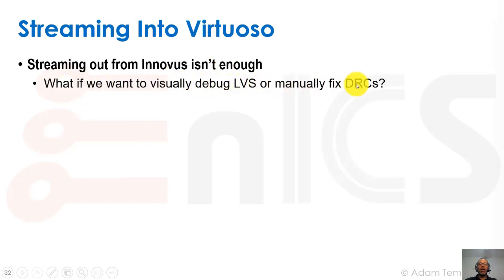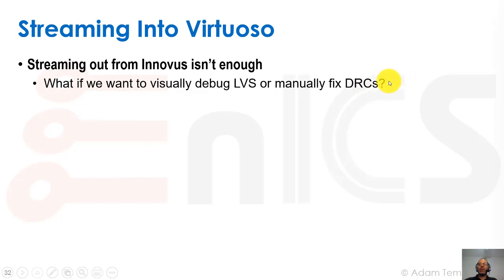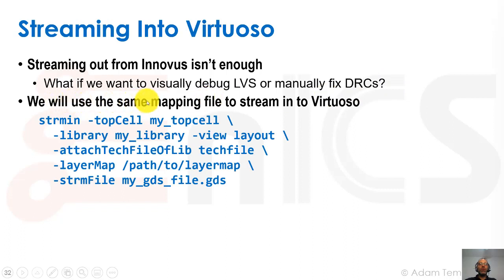What if we want to visually debug LVS or manually fix DRCs? Often our last step before tapeout is taking those small DRCs — a little spacing error in Metal 2, or some via overlap — and just manually fixing them because they were left over by the place and route tool. So we'll use the same mapping file that we used to stream in to Virtuoso.